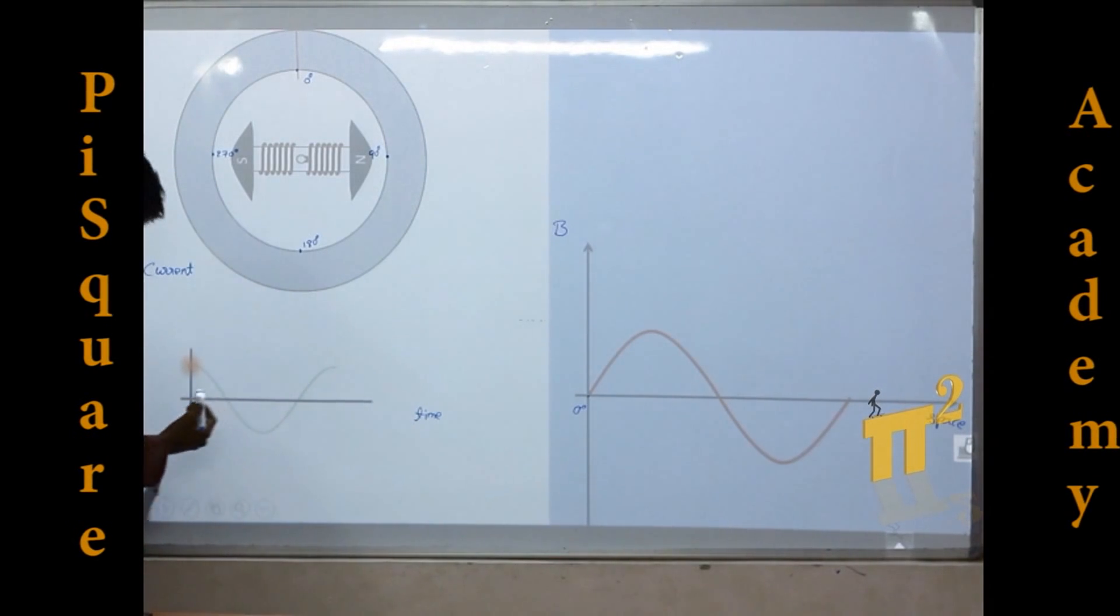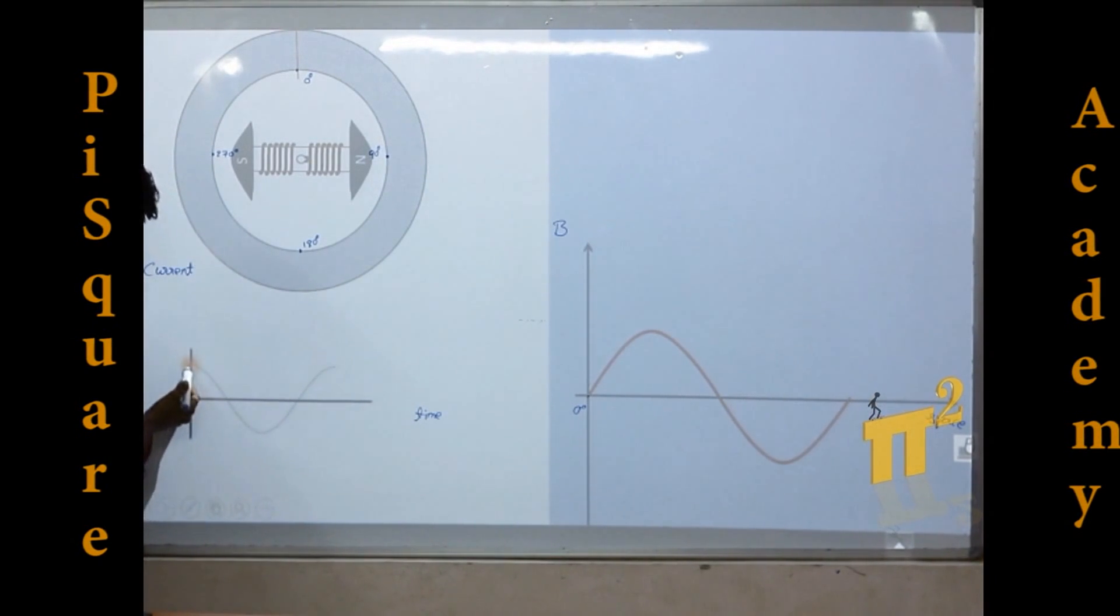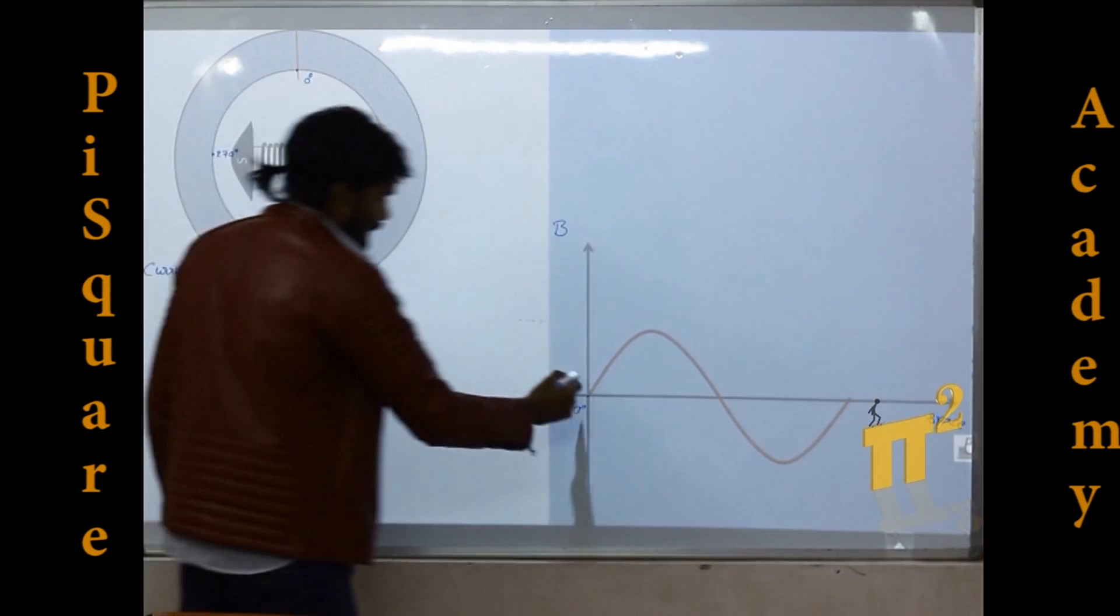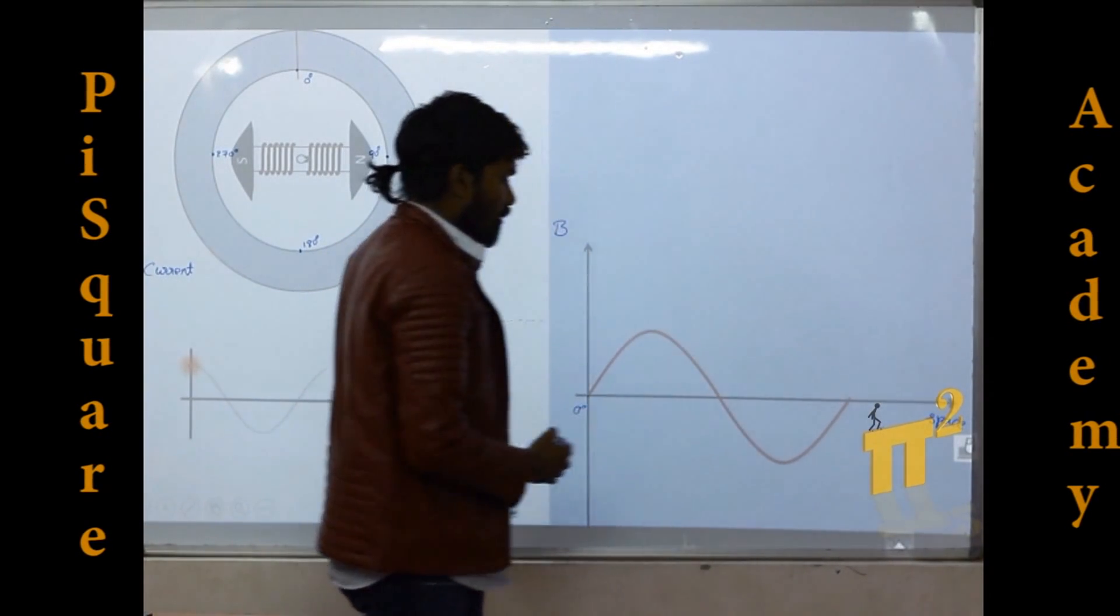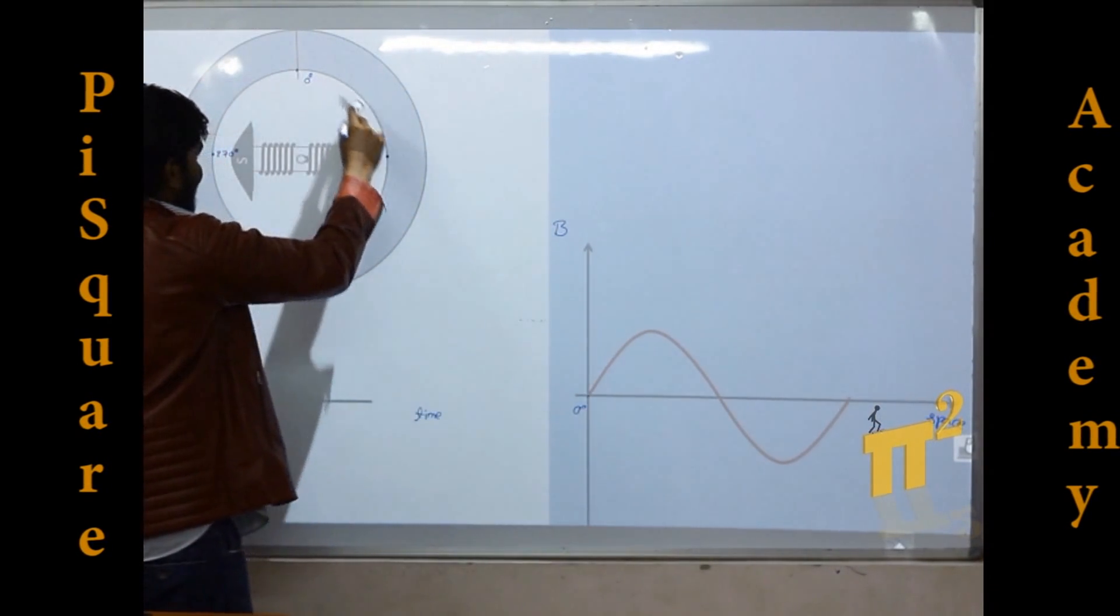So at this instant of time we have maximum current and this is the flux density shape over this space.